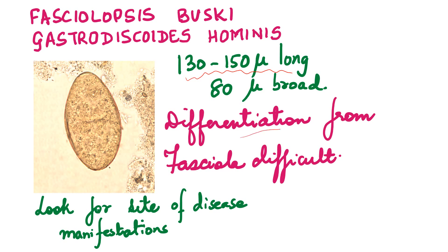Differentiation from Fasciola becomes very difficult. But sometimes you can appreciate a smooth ab-opercular end in Fasciolopsis, whereas in Fasciola species it is rough or irregular. Many times under the microscope it is very difficult to differentiate them. As I said earlier, to arrive at the likely cause of these eggs in the stool, look for what is the site of disease manifestation.